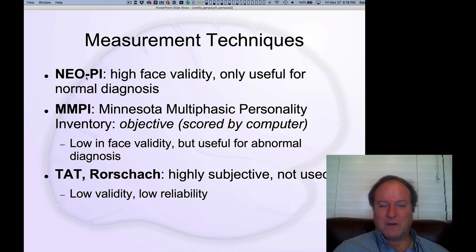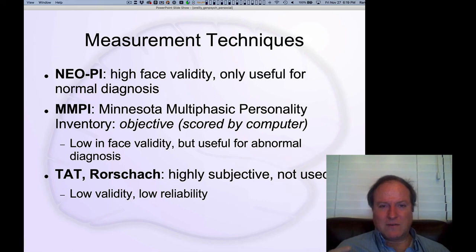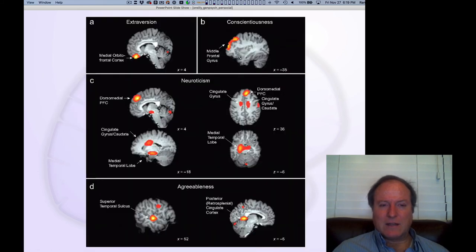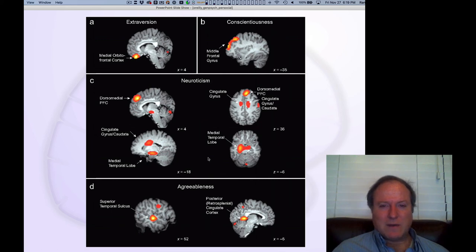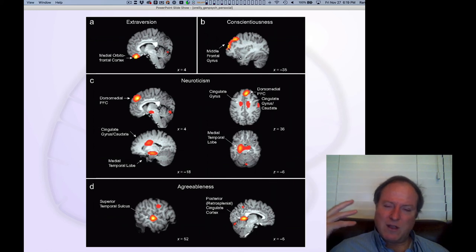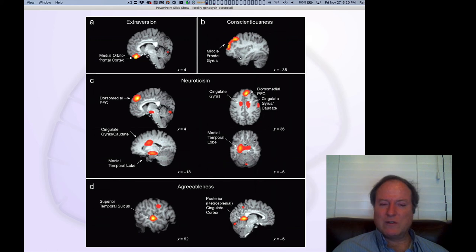The main instrument people use these days is the NEO-PI, which was developed and shaped by the Big Five personality factor variables. We can also look at different brain areas associated with people who are high versus low in these different personality dimensions. Conscientiousness seems like a prefrontal dimension — how much top-down cognitive control you can exert. Extroversion relates to a more medial emotional area.